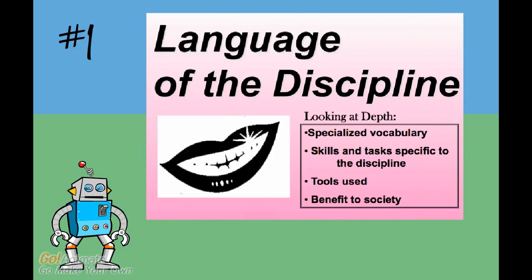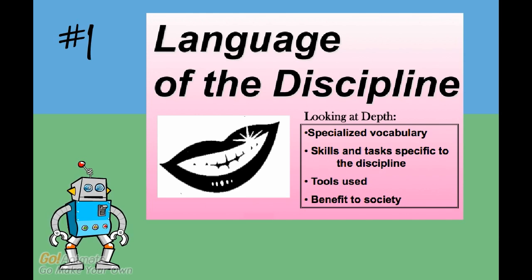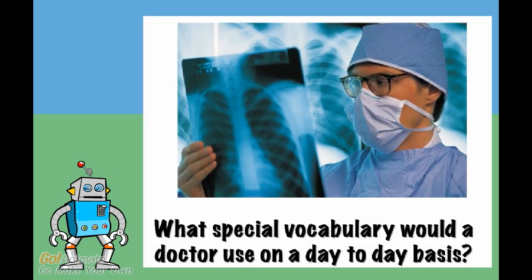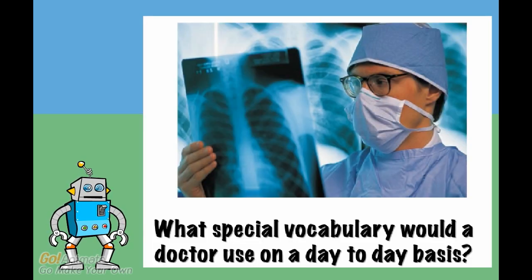The first icon is a pair of lips. It stands for the language of the discipline. This means what specialized vocabulary or tools are used to study a particular topic. If you were a doctor, what special words would you use? You might use x-ray, prescription, diagnosis, or maybe injection.